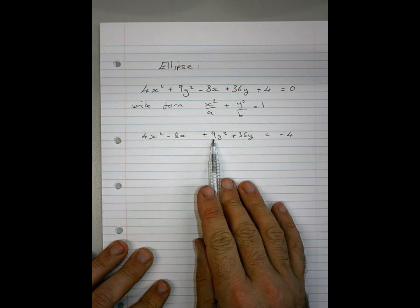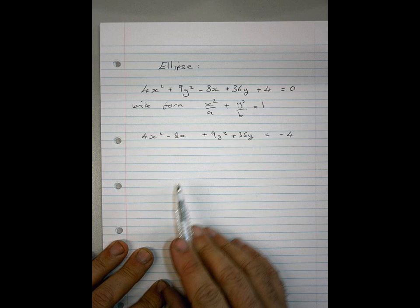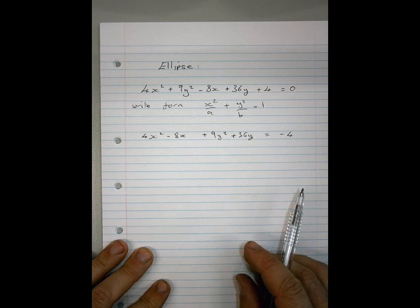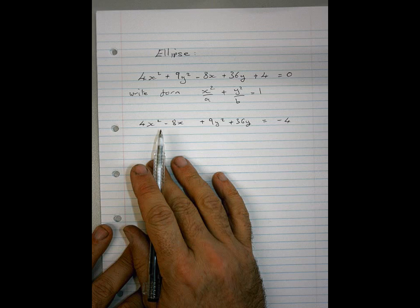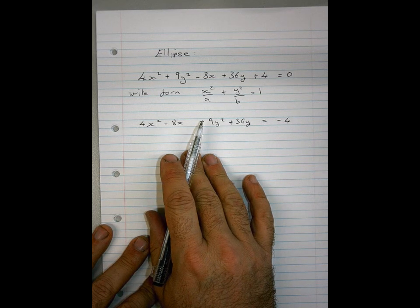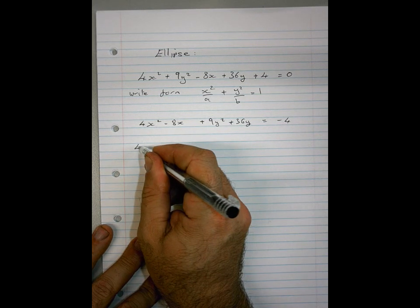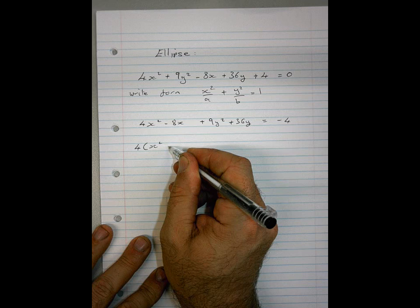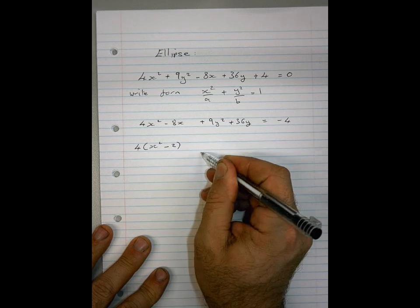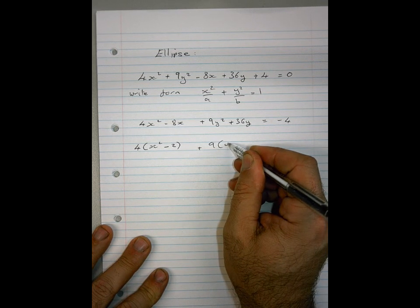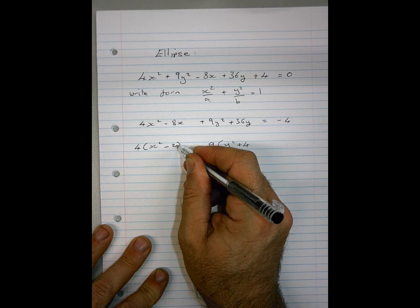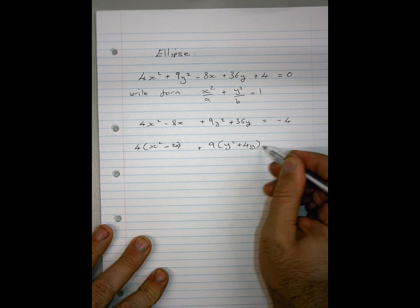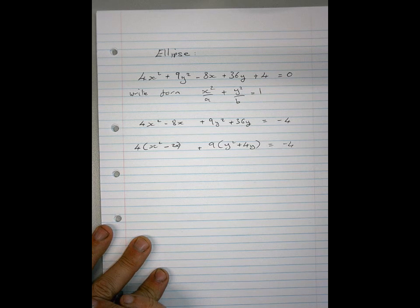Yeah, just a minute, I'm getting there. So completing the square is much easier if you've just got an x, isn't it? Yes, so why don't you write 4(x² - 2x) + 9(y² + 4y) - there should be an x there and a y there, sorry - equals negative 4. Is that making sense? That makes our life a lot easier, doesn't it?